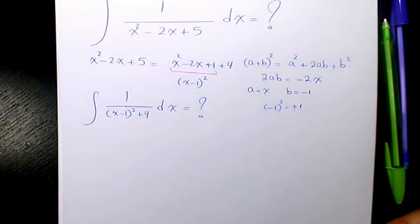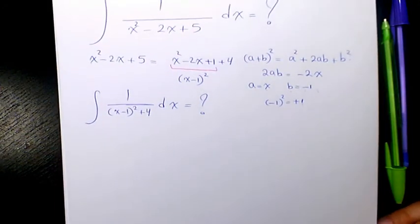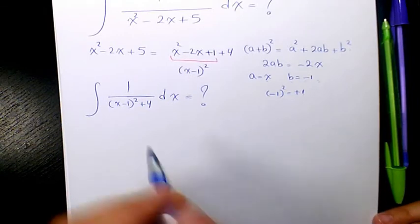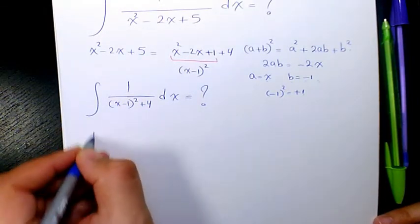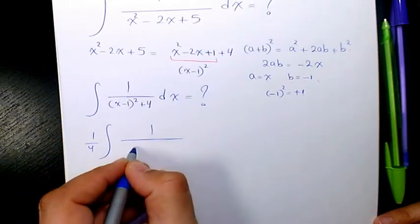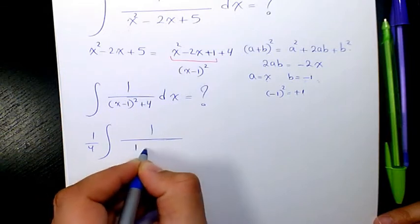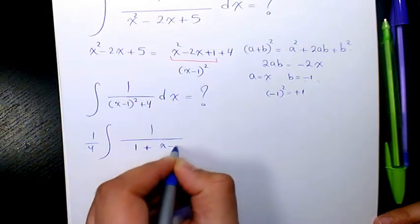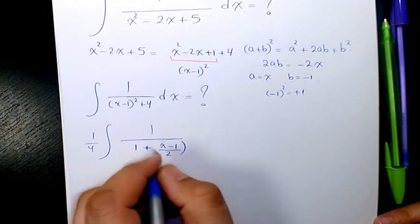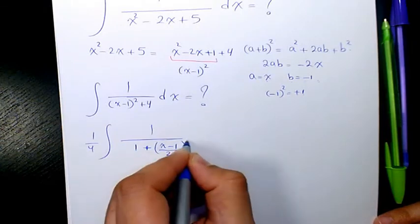Now we need to find the integral of this part. First thing I want to do, I'm going to factor out 4 here. We have 1 over 4, then 1 over 1 plus x minus 1 divided by 2 to the power of 2.